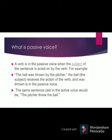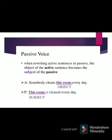A verb is in the passive voice when the subject of a sentence is acted on by the verb. For example, 'The ball was thrown by the pitcher.' The ball is the subject receiving the action of the verb 'was thrown' in the passive voice. The same sentence in the active voice would be: 'The pitcher threw the ball.' When we change this into the passive voice, we say: 'The ball was thrown by the pitcher.'